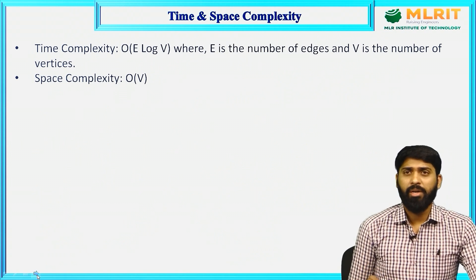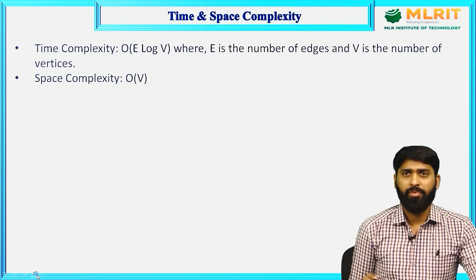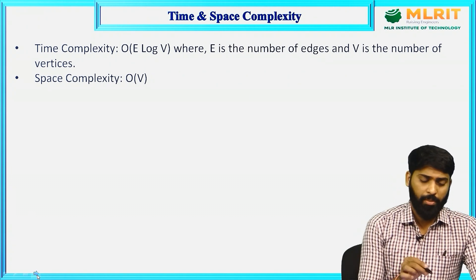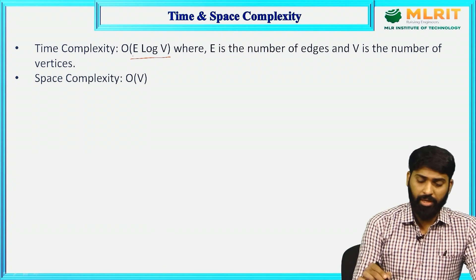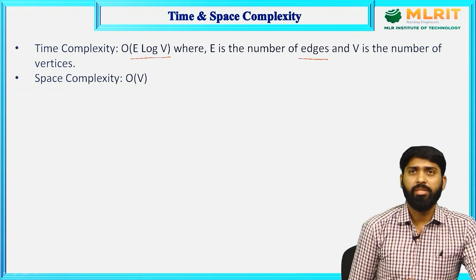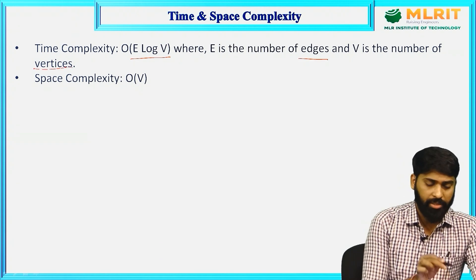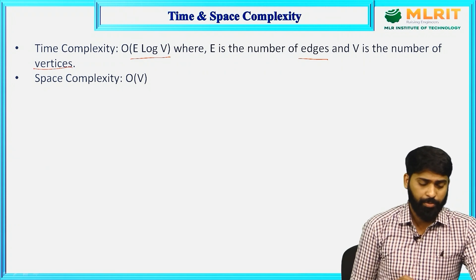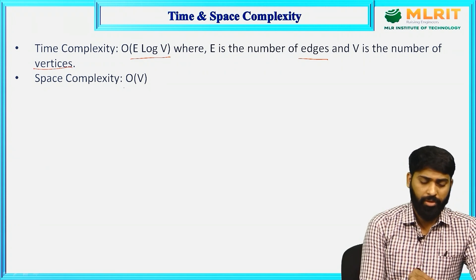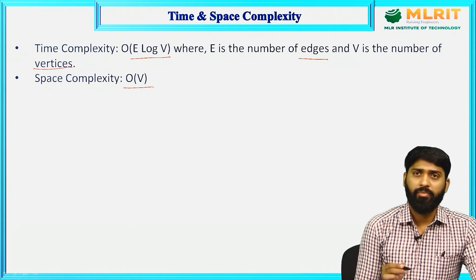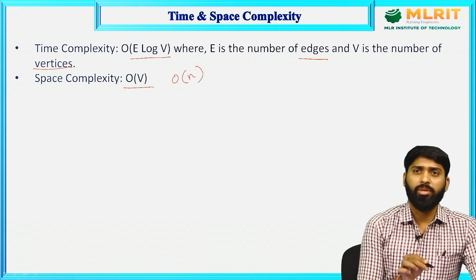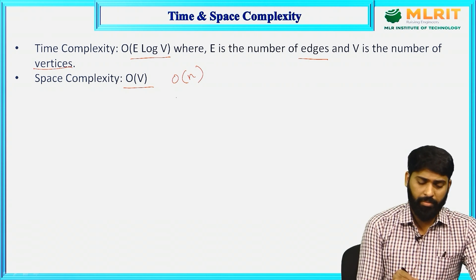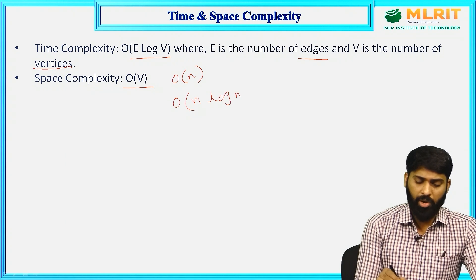Time and space complexity for Dijkstra's algorithm: the time complexity is O(E log V), where E is the number of edges and V is the number of vertices. Space complexity is O(V). If the number of vertices is N, then it is O(N). If both edges and vertices are the same, then the time complexity is O(N log N).